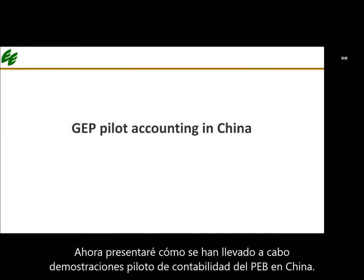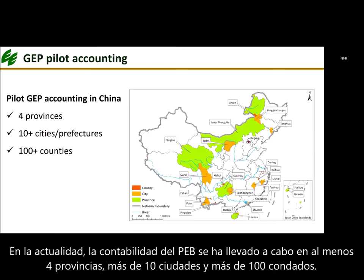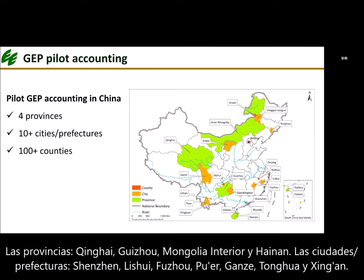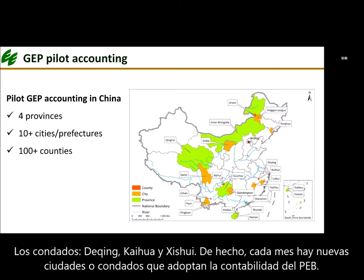Now I will introduce how GEP accounting pilot demonstrations have been carried out in China. At present, GEP accounting has been carried out in at least four provinces, more than 10 cities, and over 100 counties in China. Provinces include Qinghai, Guizhou, Inner Mongolia, and Hainan. Cities or prefectures include Shenzhen, Lishui, Fuzhou, Puer, Ganze, Tonghua, and Xin'an Banner. Counties include Deqing, Kaihua, and Xishui. In fact, every month there are new cities or counties that adopt GEP accounting.